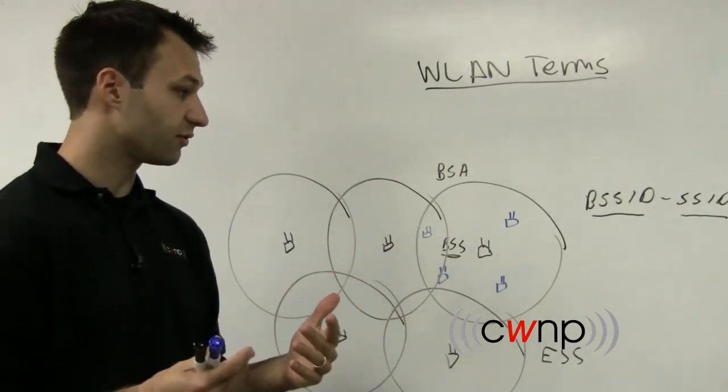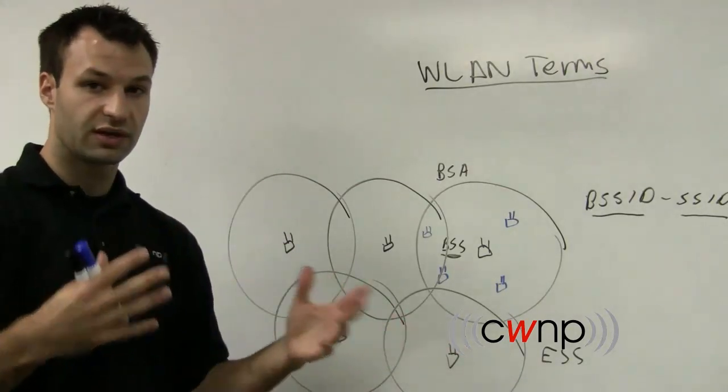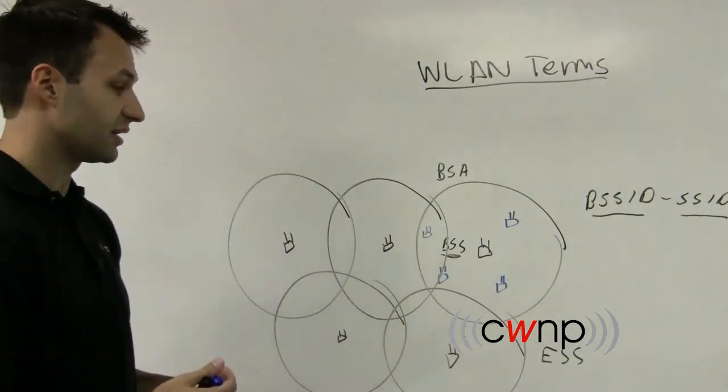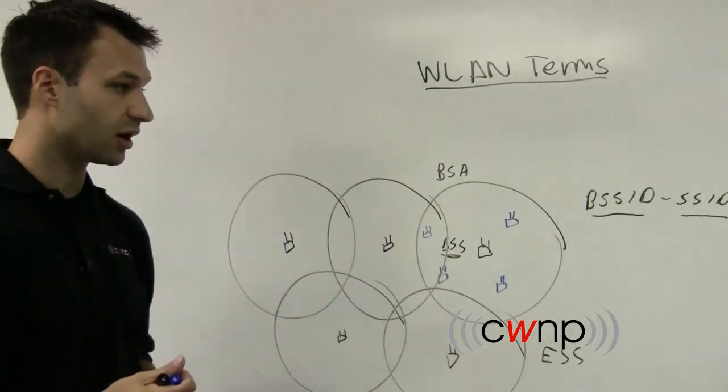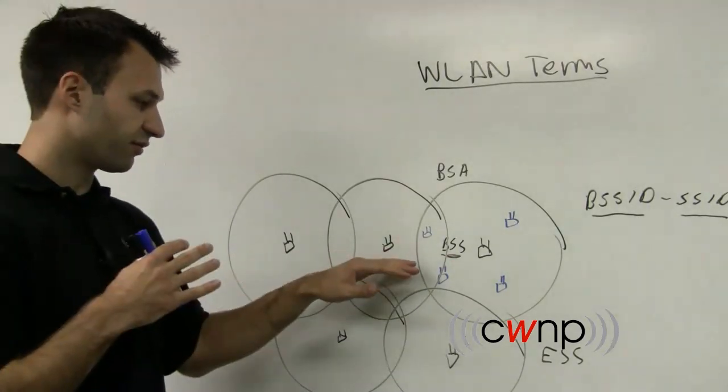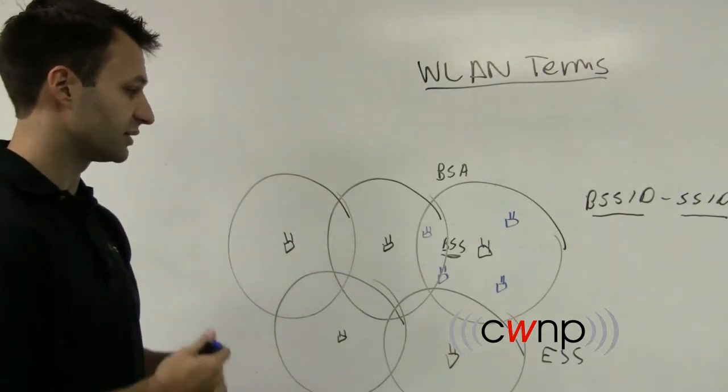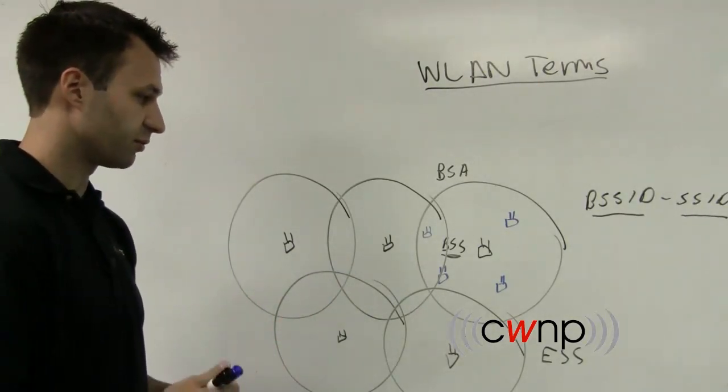They're both in the same service set, extended service set, so you can join either one using that same SSID. They both should support the same parameters within that service set, but it's two different, basically RF distribution, or two different types of RF distribution from each access point.